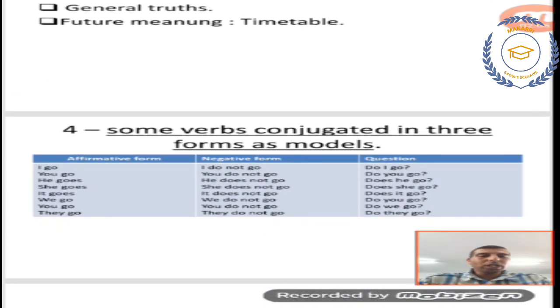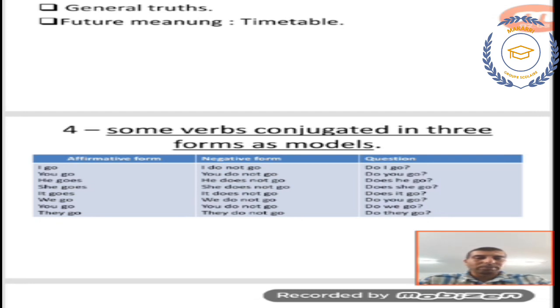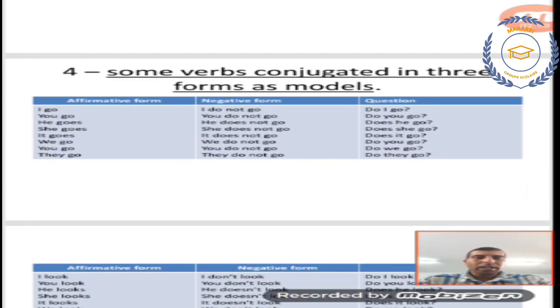Some verbs conjugated in the three forms as a model. In this table here, I give you some examples. First one is verb to go, affirmative form. I go, you go, he goes, she goes, it goes. We go, you go, they go. What do you observe? The verb doesn't change after I, you, we, you, they, but after third person singular, I add ES.